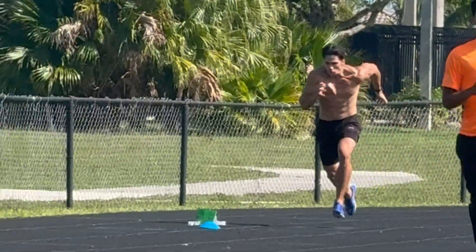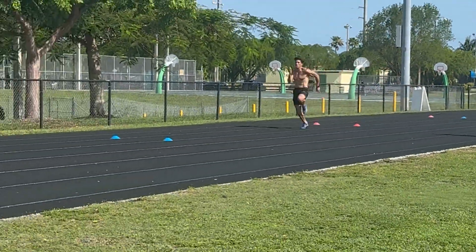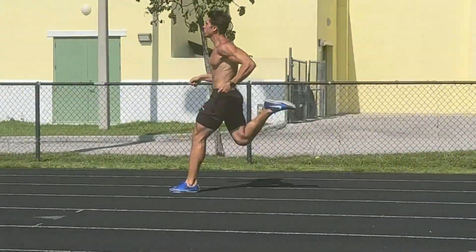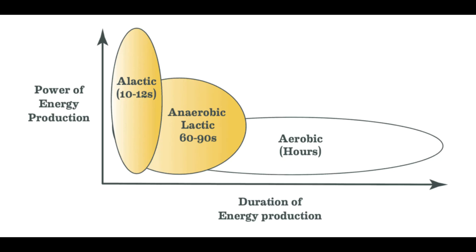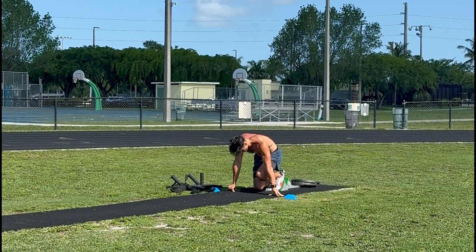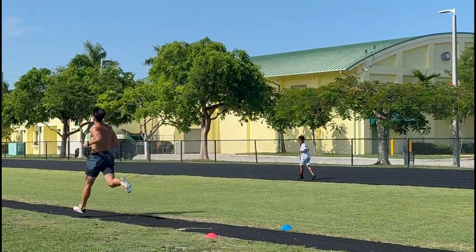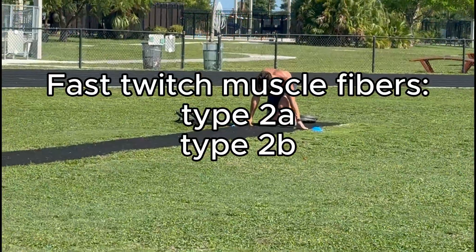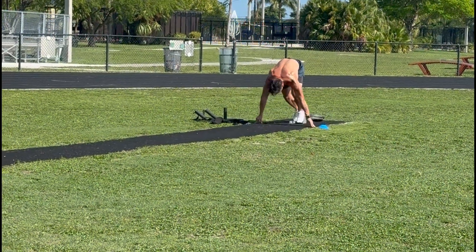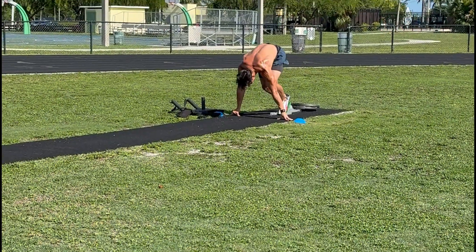Speed training comes in many different forms. When referring to speed training, it's important to understand which type of energy system your body uses. When performing sprint training, your body uses its anaerobic energy system, which is when the body uses stored energy within the muscle in the form of ATP and glycogen to produce energy without oxygen. Intense quick burst activities like sprinting or weightlifting use this energy system. During these intense activities, your body uses its type 2a and type 2b muscle fibers, or fast twitch muscle fibers, which are very powerful and contract quickly but tire out quickly.